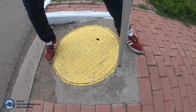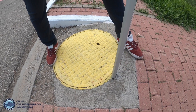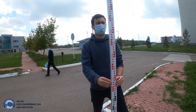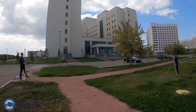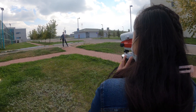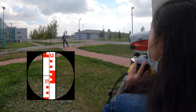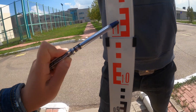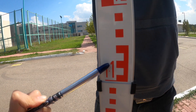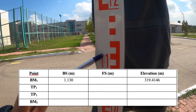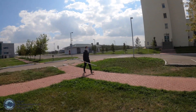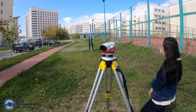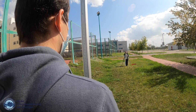Now we start. Eldar is standing on the benchmark at our first backside point. I will look through the telescope to the staff — my reading is 1.13 meters. Now Eldar moves to turning point one and I will measure the foresight.